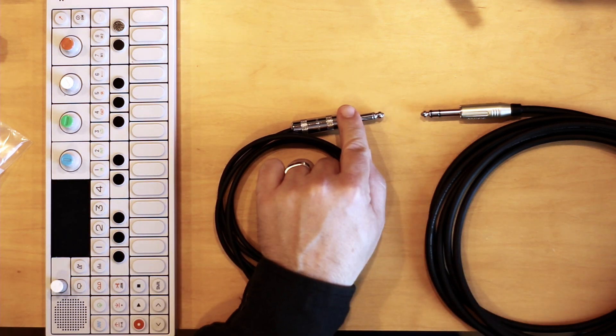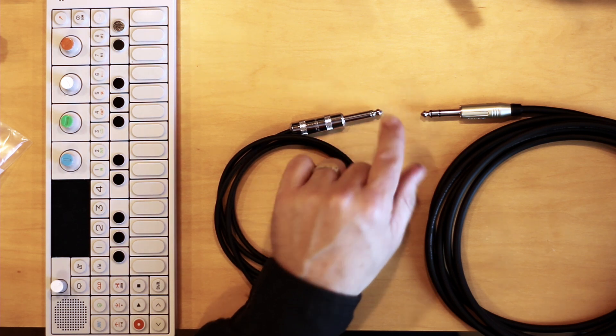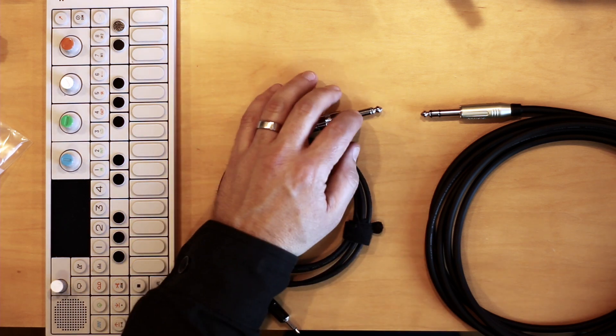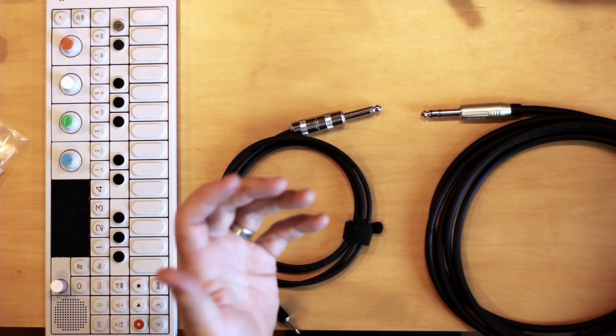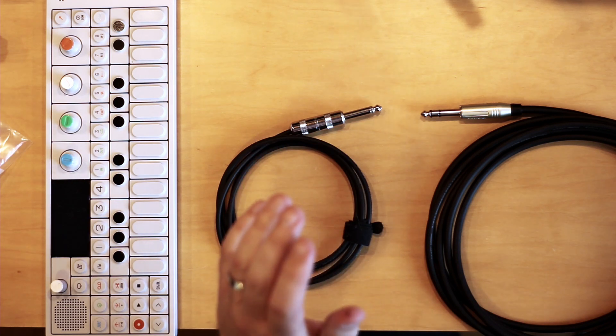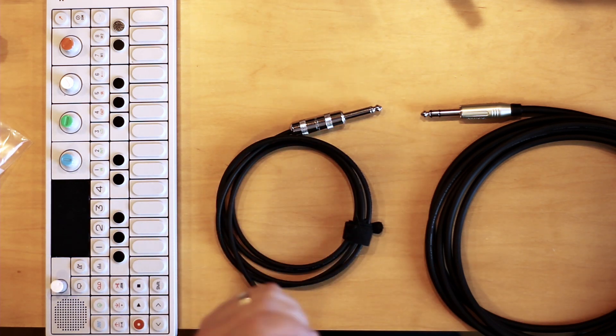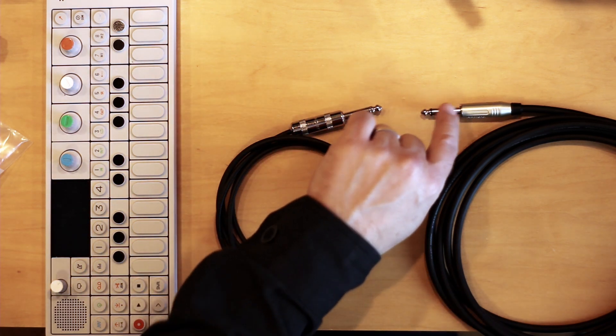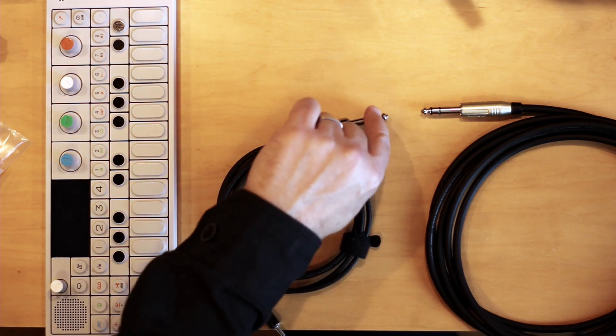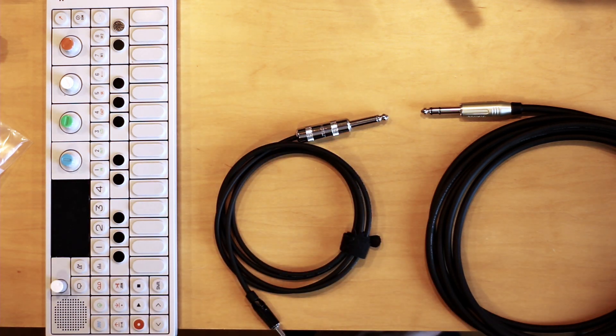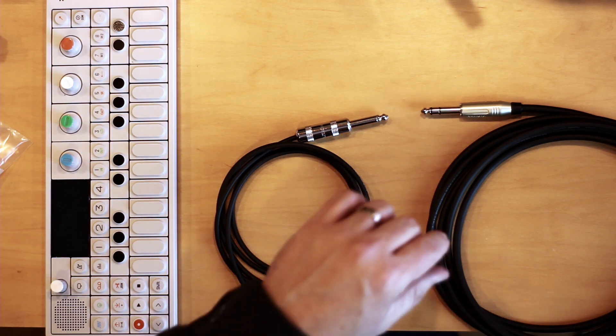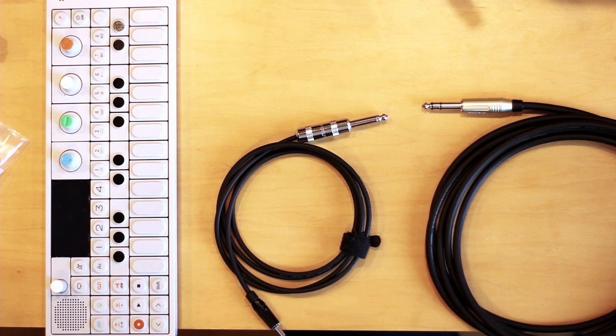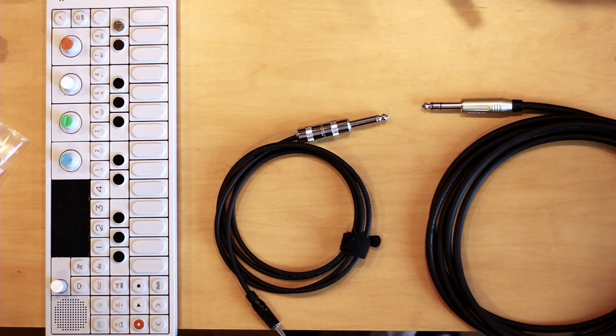So here's your quick tip sleeve versus tip ring sleeve lesson - TS, TRS. So TS means tip and sleeve. The tip carries the signal in the form of voltage from your instrument, guitar, synthesizer, whatever, and the sleeve is the ground. Again, I'm not going to get into the electronics theory of why you need a ground, but just know that without the ground you really can't get a true signal at all.